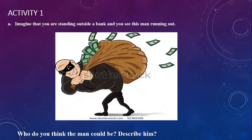Activity one: Imagine you are standing outside a bank and you see a man running out. Who do you think this man could be? Definitely we can say he is a burglar or thief, because he has concealed his eyes with a mask, and he is carrying bags with a lot of money. So he is a thief or burglar.